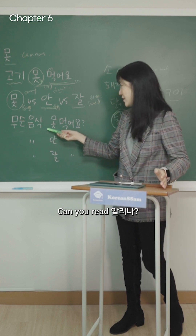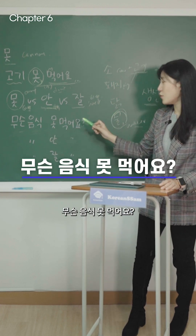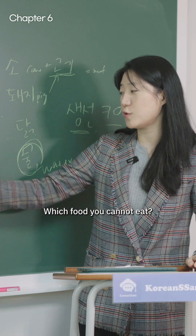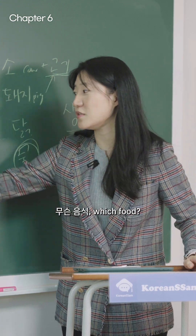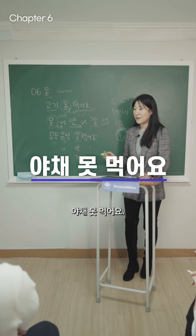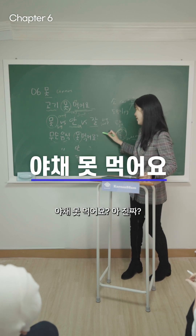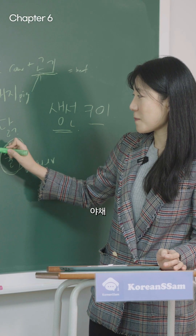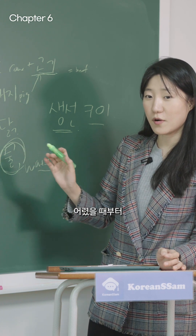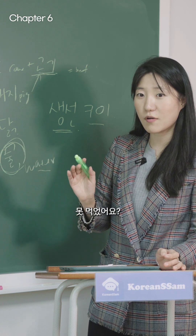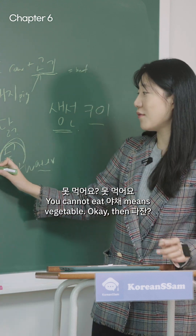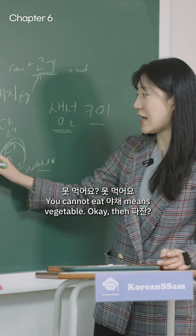Can you read, Alina? 무슨 음식 못 먹어요? — Which food can you not eat? 야채 못 먹어요? — You cannot eat vegetables? Because it's not tasty. 어렸을 때부터 못 먹었어요? — You couldn't eat it since you were young? 못 먹어요 — you cannot eat 야채. 야채 means 'vegetable.'